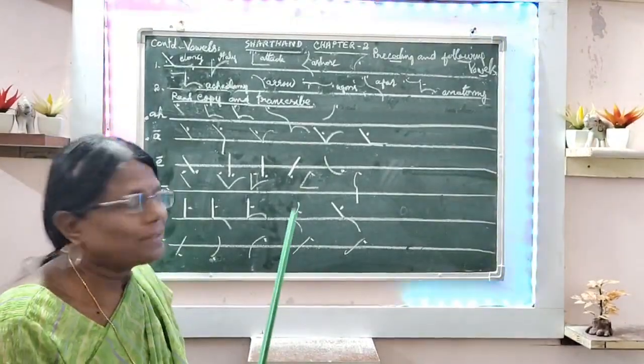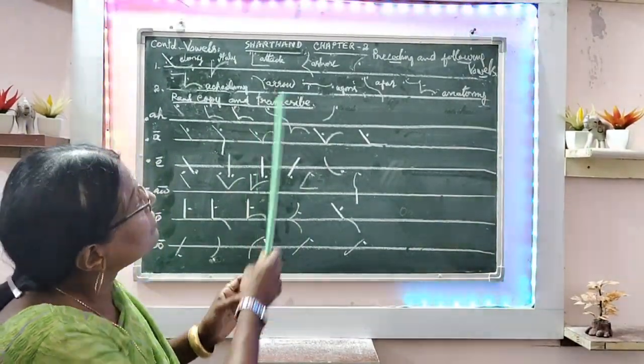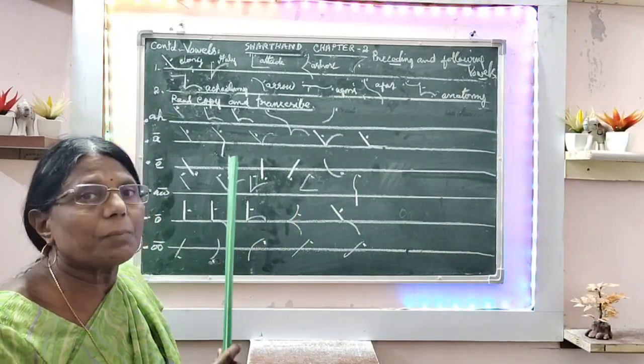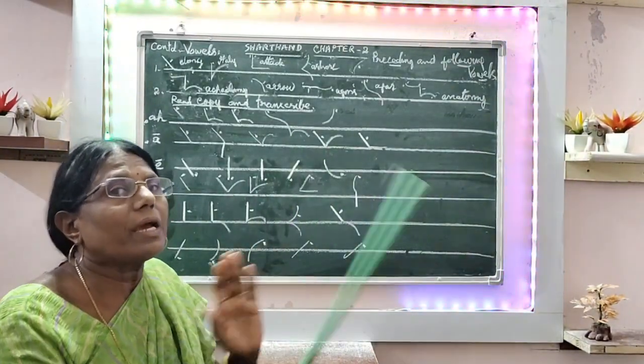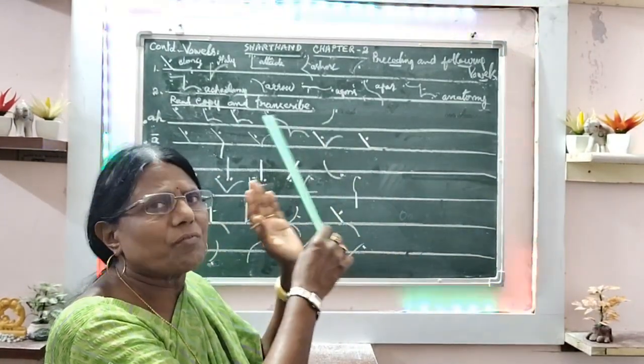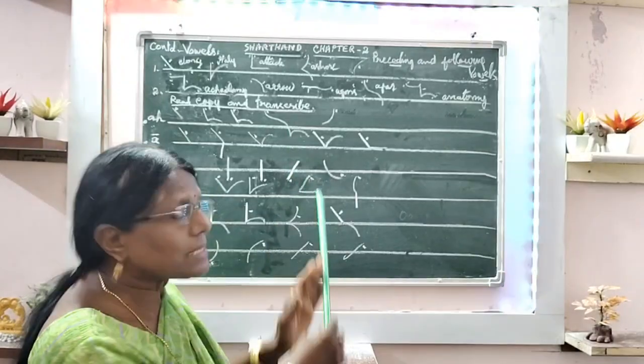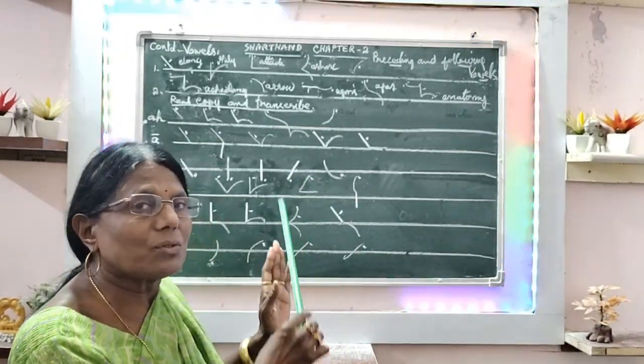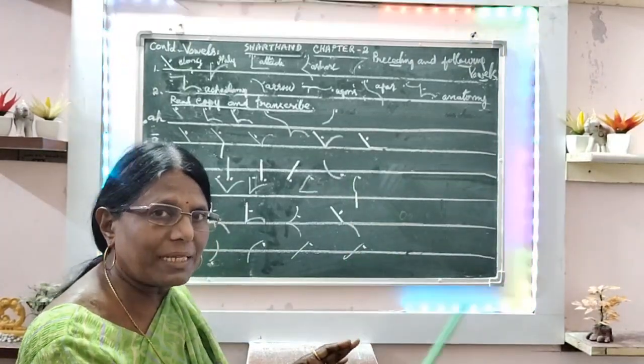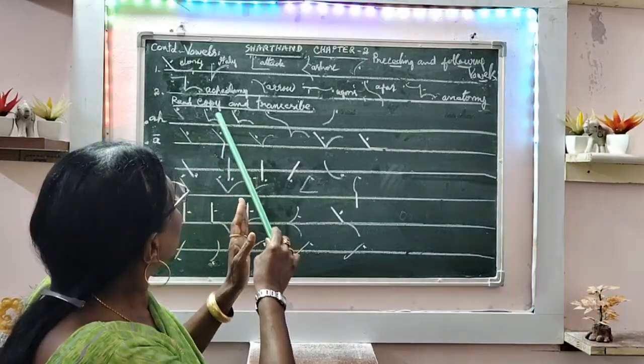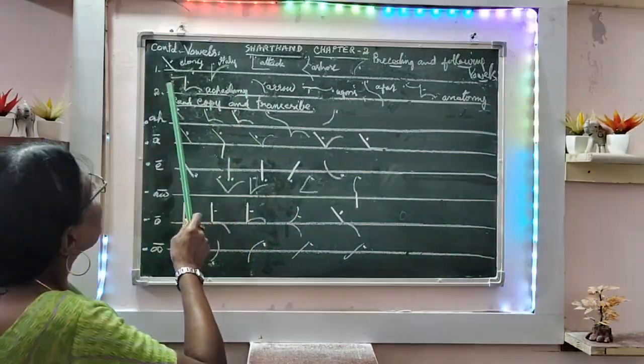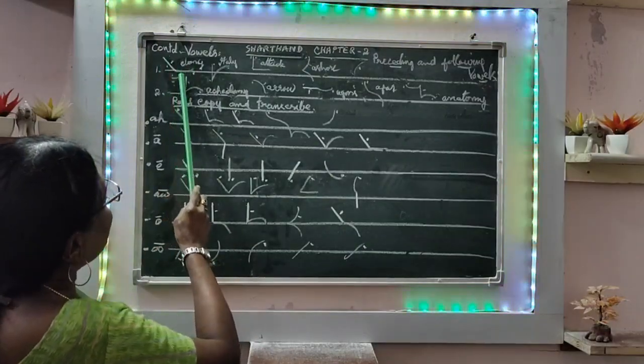Good morning and welcome to the shorthand class of mine today. We are going along with chapter 2. In the previous class I had given you the preceding bubbles and following bubbles placement, how they are placed. Now I would like to have a review of that. There will be an exercise which you will have to write, read, and transcribe. First you will have to write, while writing you will know the reading. After that, read it, copy it first, then transcribe it.